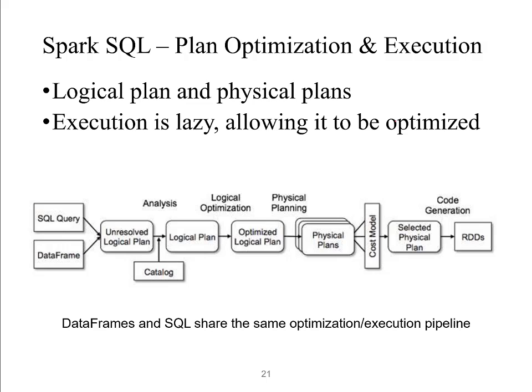Because execution is lazy, when an action is triggered we already know the whole picture, which means we can optimize in a global scope. The figure here shows that data frames and SQL share the same optimization and execution pipelines because they are essentially equivalent. The pipeline begins by writing the code — SQL queries or data frame methods. We then submit the code, and if the code is valid, Spark will convert it into a logical plan.